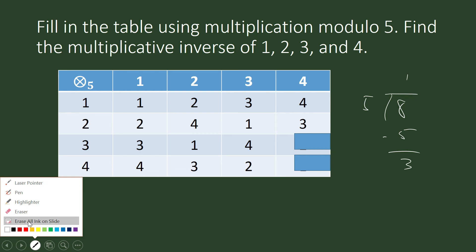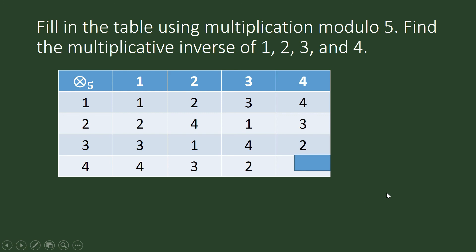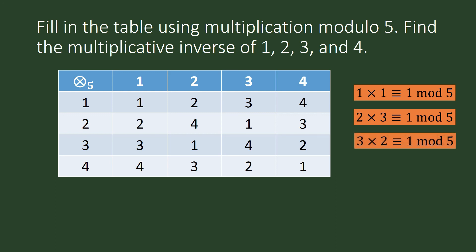4 times 3 is 12, congruent to 2 modulo 5. So the multiplicative inverse of 1 modulo 5 is 1, the multiplicative inverse of 2 modulo 5 is 3, the multiplicative inverse of 3 modulo 5 is 2, and the multiplicative inverse of 4 modulo 5 is 4.